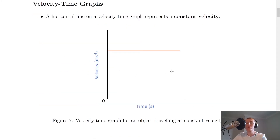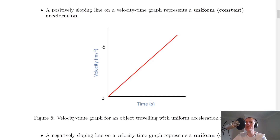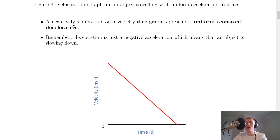A horizontal line on a velocity-time graph represents a constant velocity. A positively sloping line represents a uniform (constant) acceleration — an object with constant acceleration will show a positively sloping line. On the other hand, a negatively sloping line on a velocity-time graph represents a uniform deceleration, or constant deceleration. Remember, a deceleration is just a negative acceleration, meaning the object is slowing down.